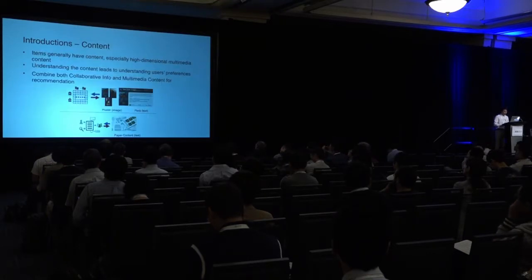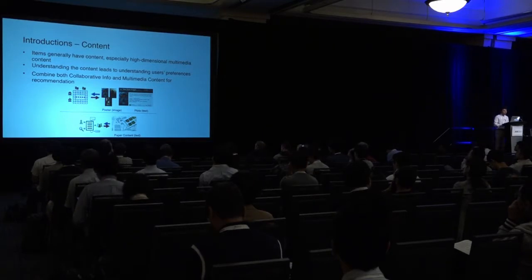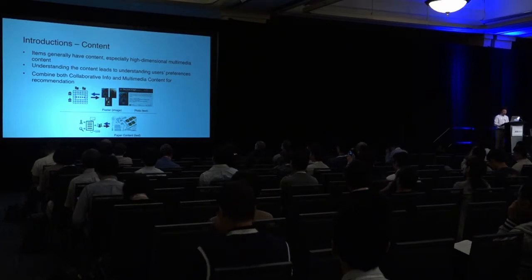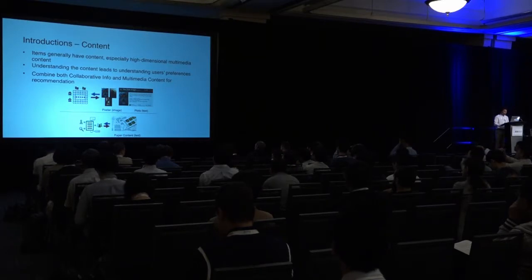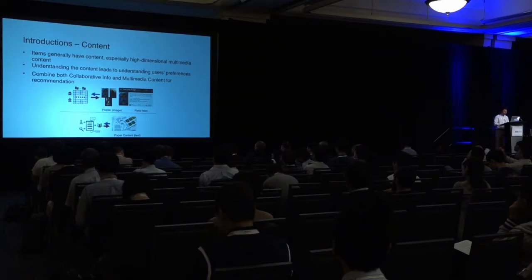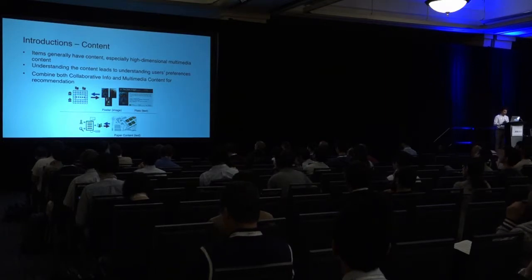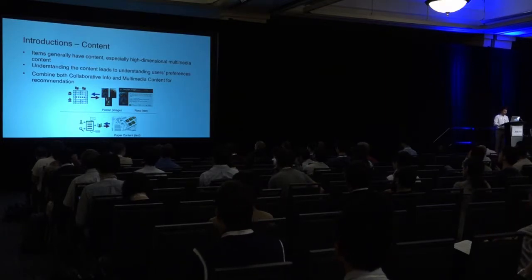To resolve this problem, our intuition is that items — especially multimedia items — generally have content, maybe high-dimensional unstructured content. For example, in movie recommendation, we not only have the ratings but also the movie itself, such as descriptions of the movie plot or posters. In paper recommendation, we not only have likes or not-likes, but we have the abstract or the paper itself.